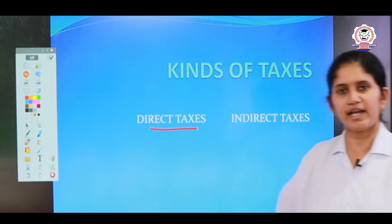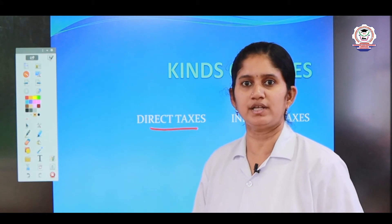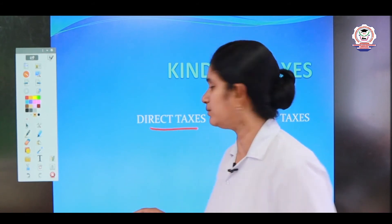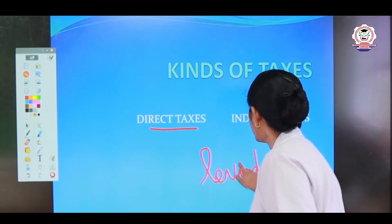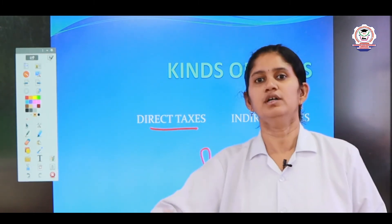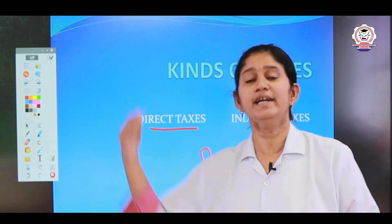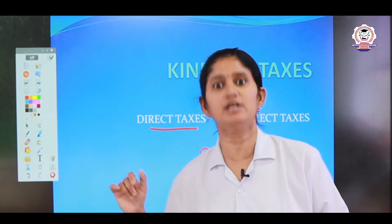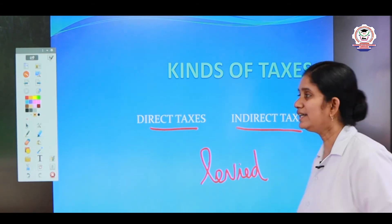What is meant by indirect tax? Indirect tax means it is indirectly levied on the buyer and it is paid by the seller to the government instead of the buyer. Levied means nothing but charged. It is charged to the buyer indirectly, and the seller pays it to the government instead of the buyer. So it is called an indirect tax.